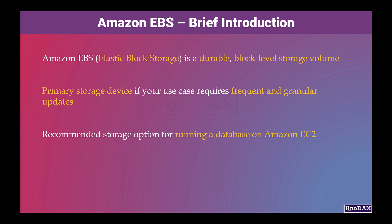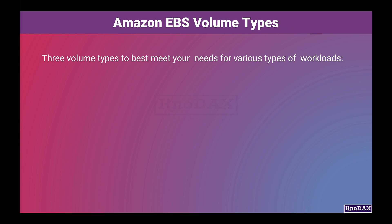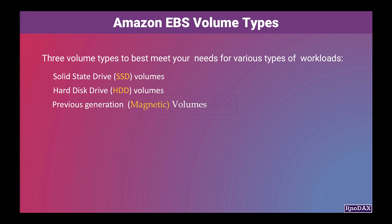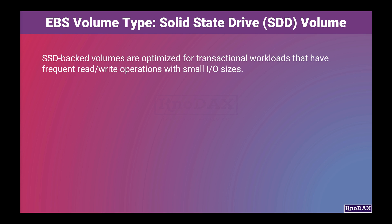Amazon EBS provides three volume types to best meet your needs for various types of workloads: solid state drive or SSD volumes, hard disk drive or HDD volumes, and previous generation volumes, also called magnetic. SSD-backed EBS volumes are optimized for transactional workloads that have frequent read or write operations with small I/O sizes.